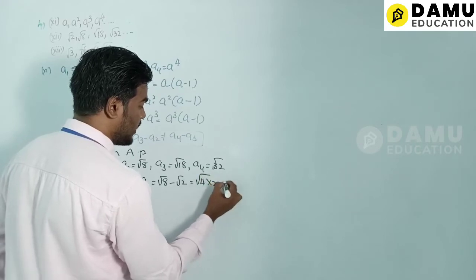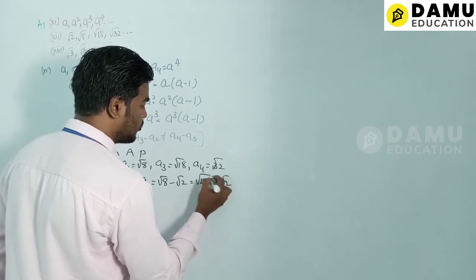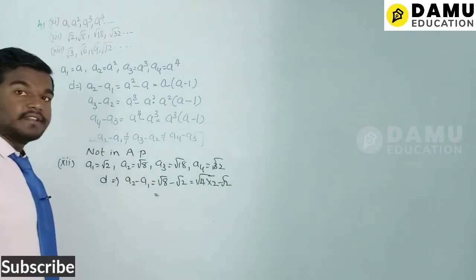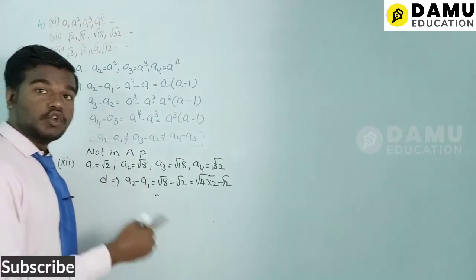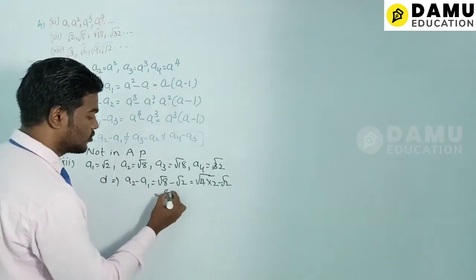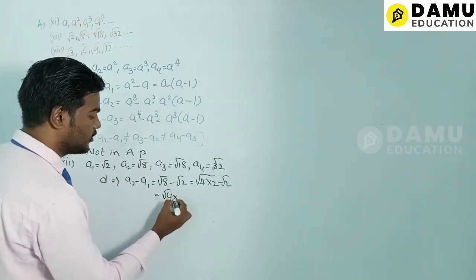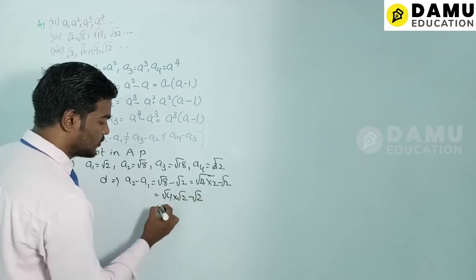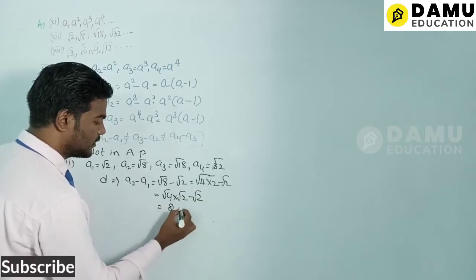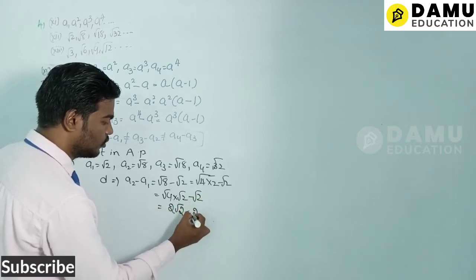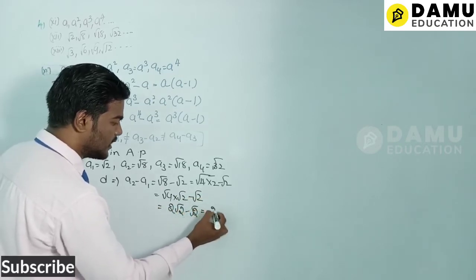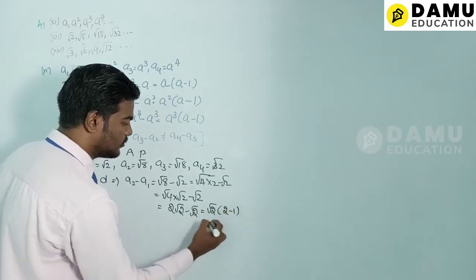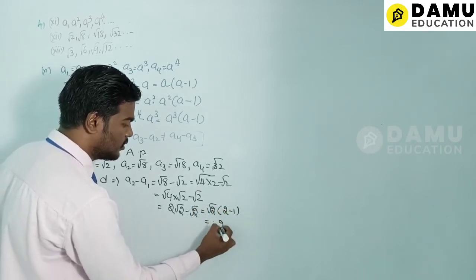So d = 2√2 − √2. Taking √2 as common: (2 − 1)√2 = √2. The first common difference is √2.